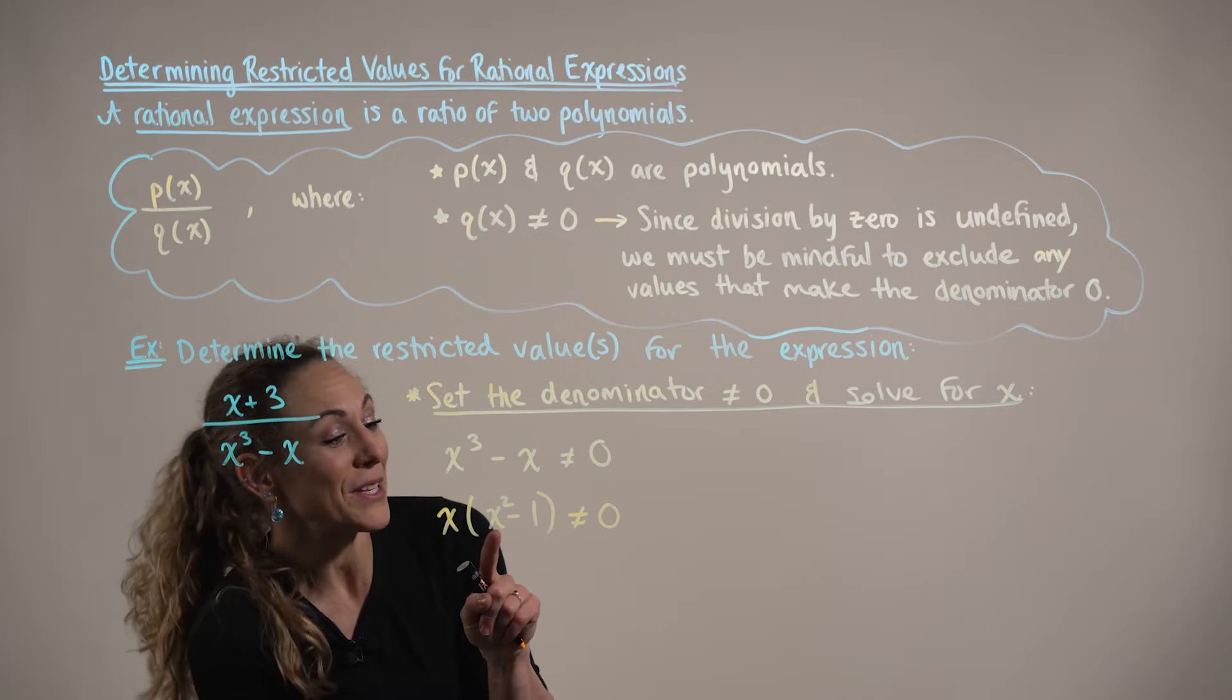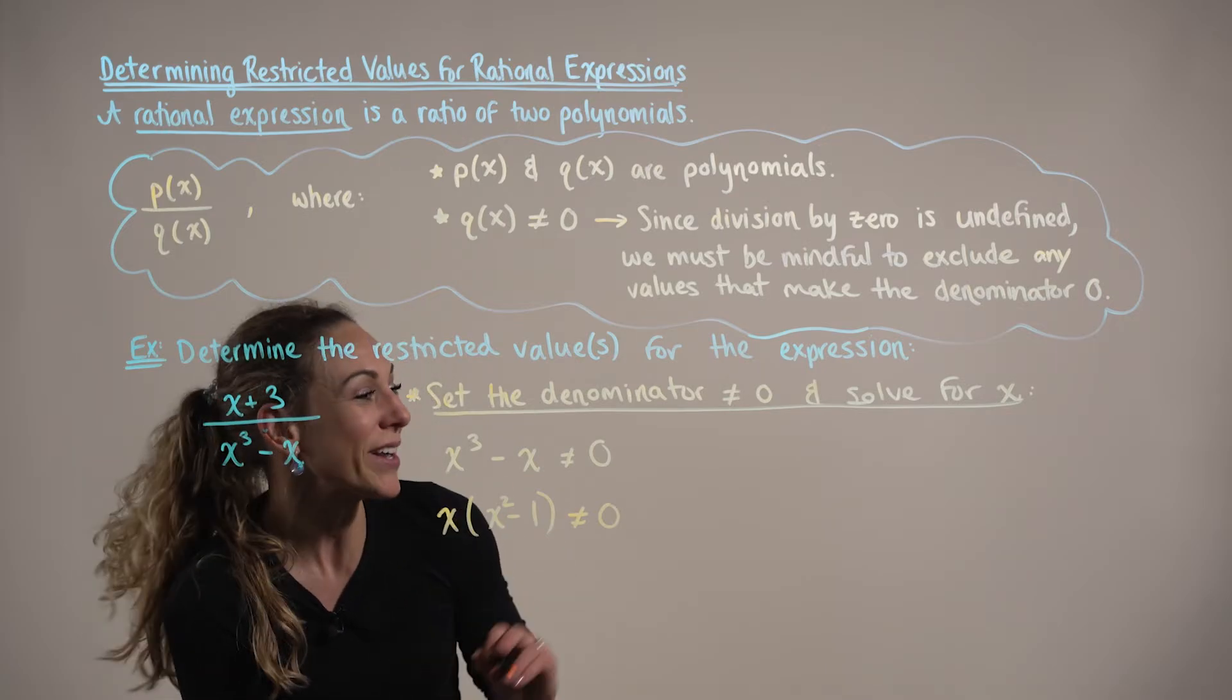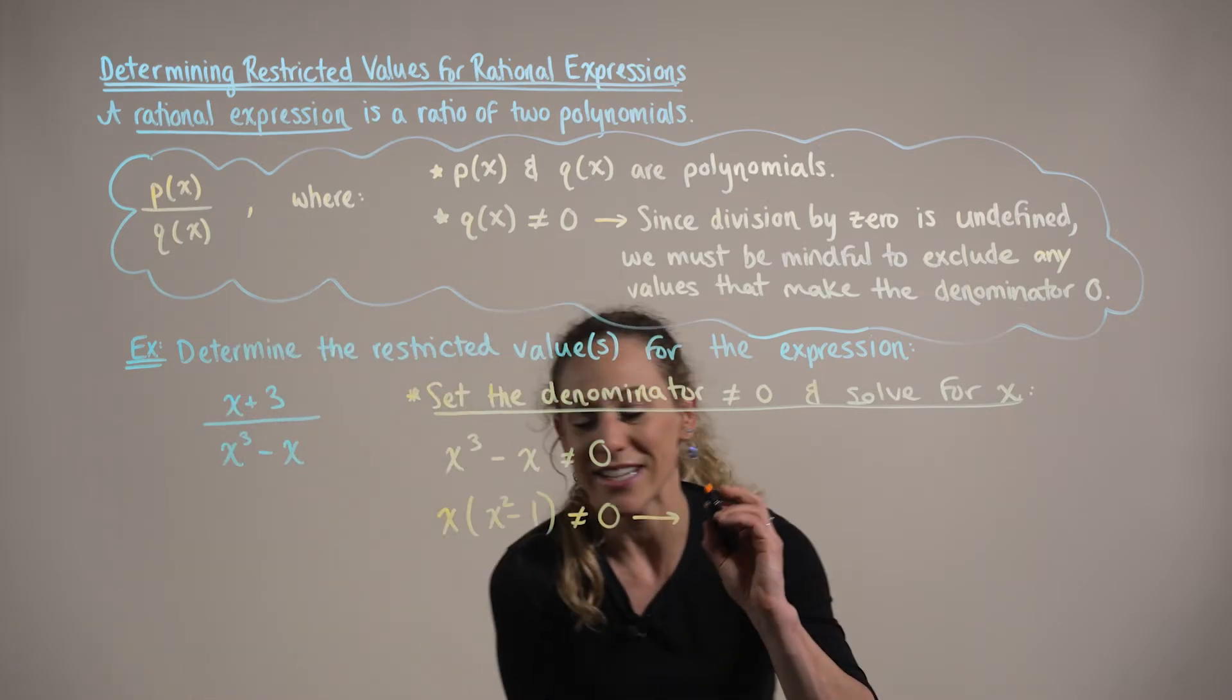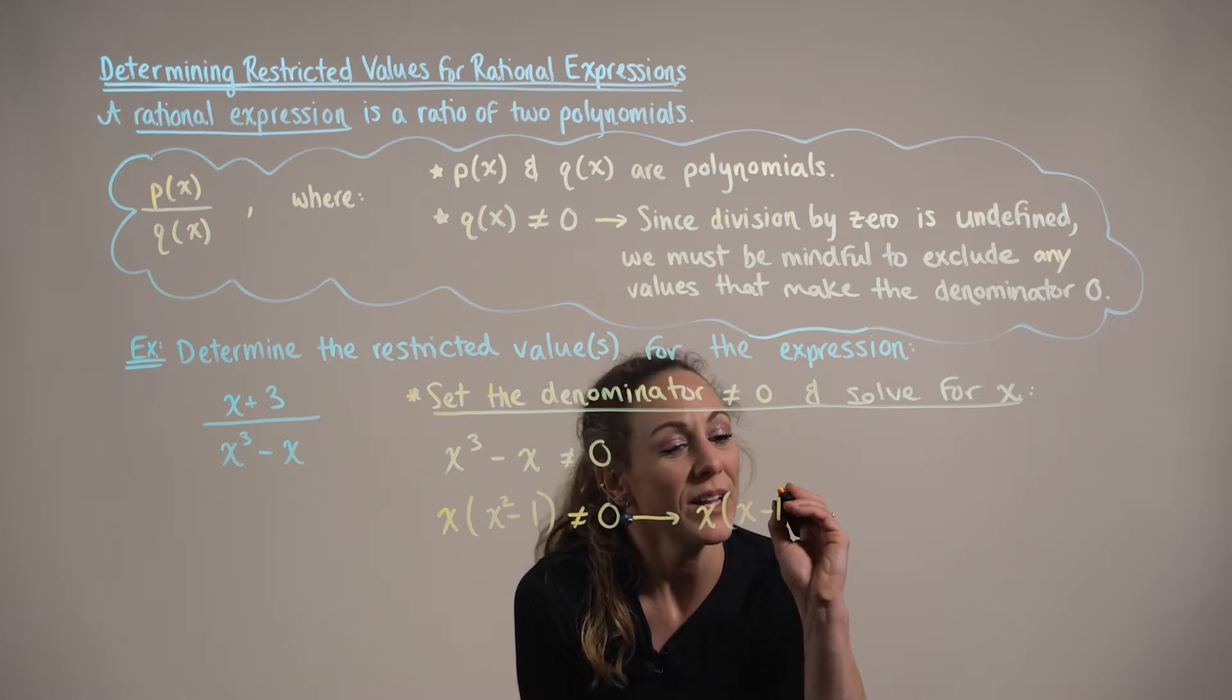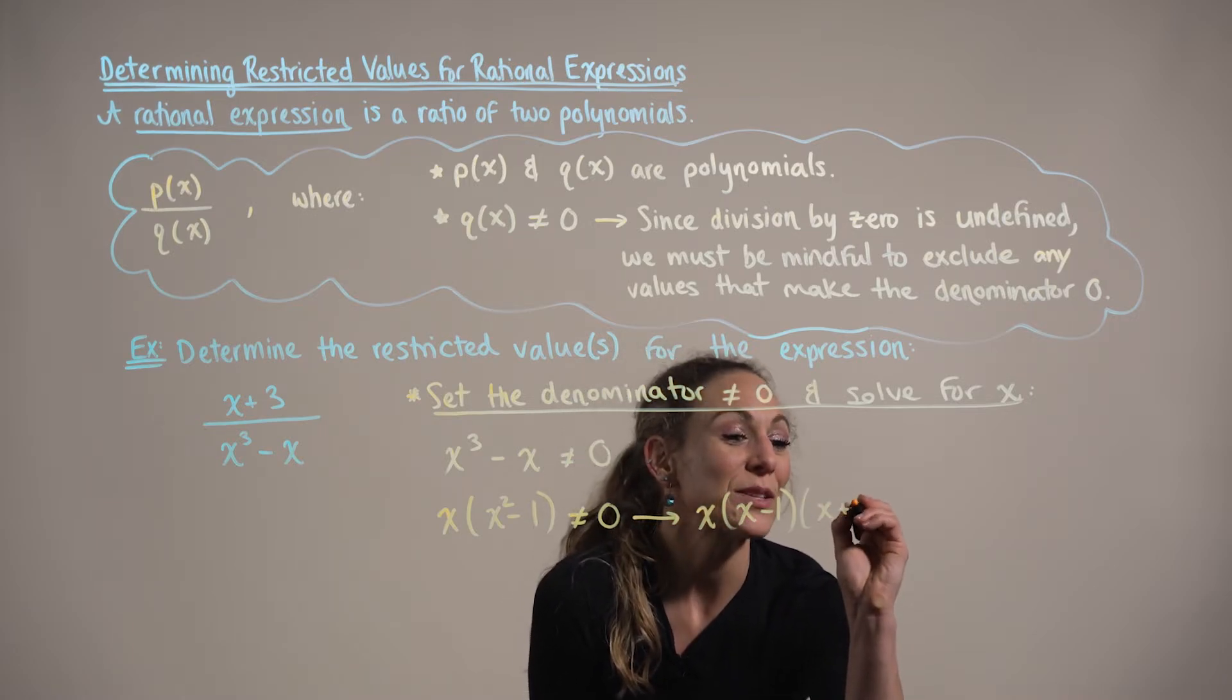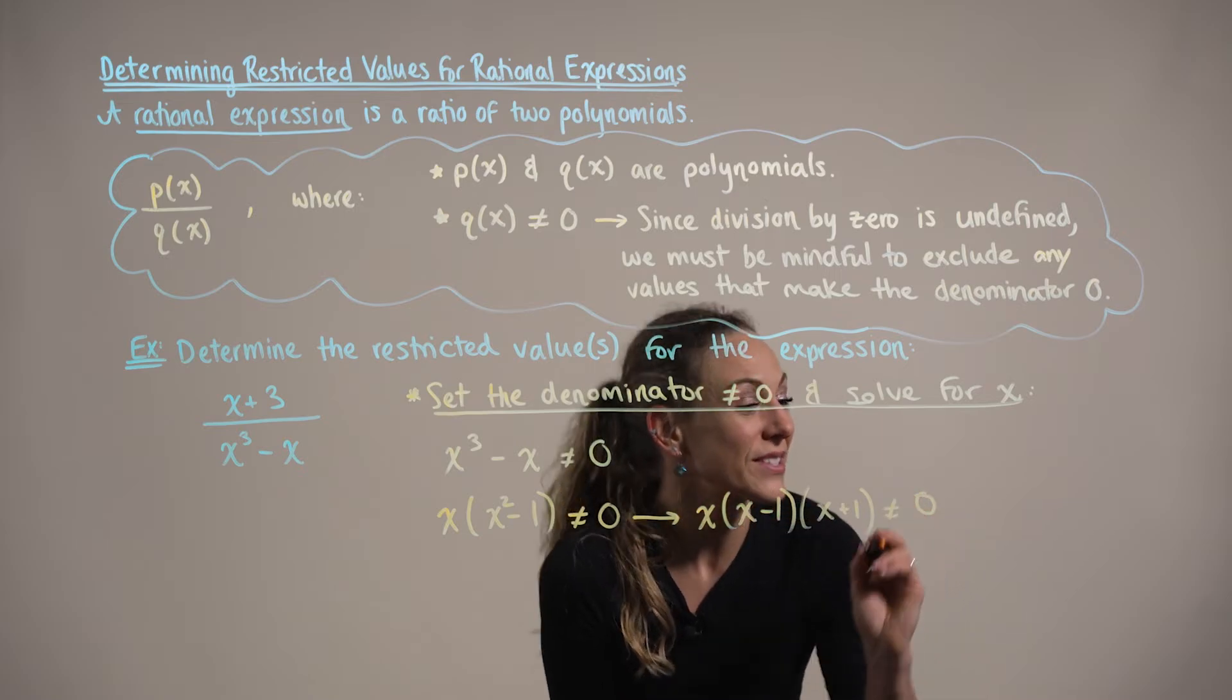And lo and behold, this binomial is a difference of squares. So we can further factor this to the expression x times x minus 1 times x plus 1 cannot be equal to 0.